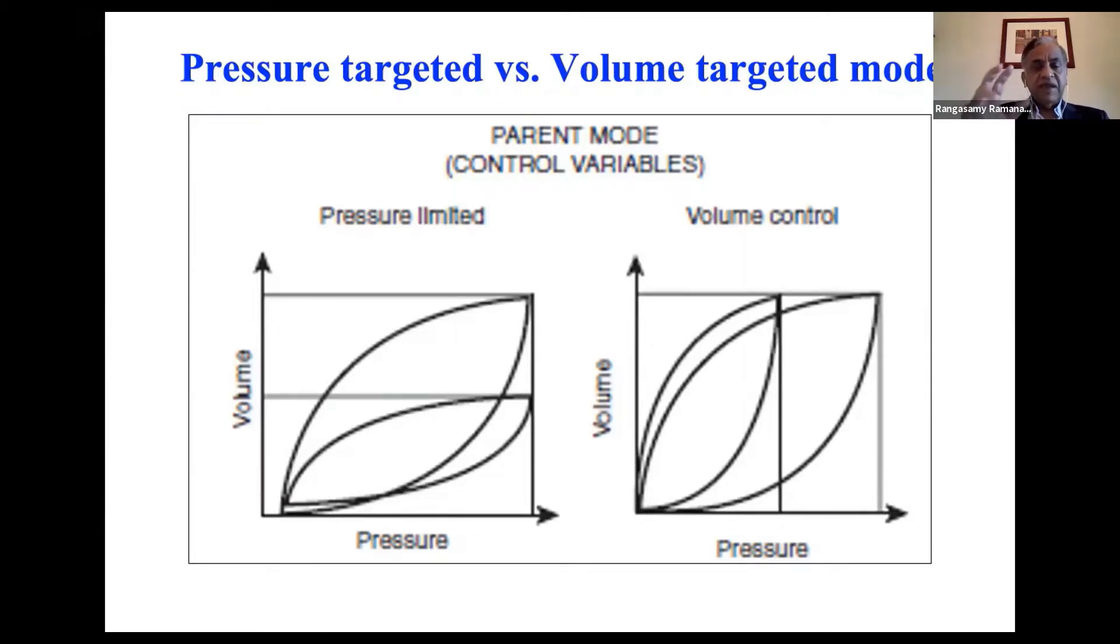But if you don't have the ventilator that can deliver a volume guarantee mode, you can still use pressure control. As long as you put a volume limit, you set the alarm on volume limit.